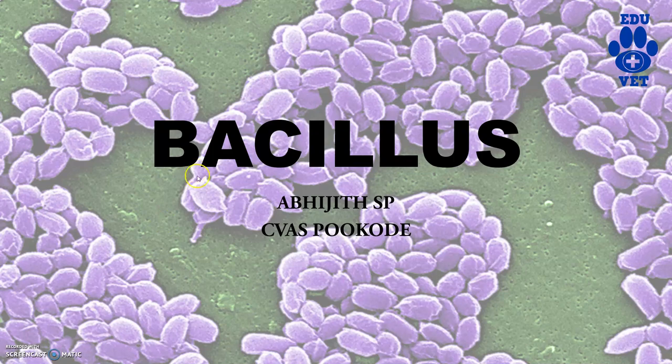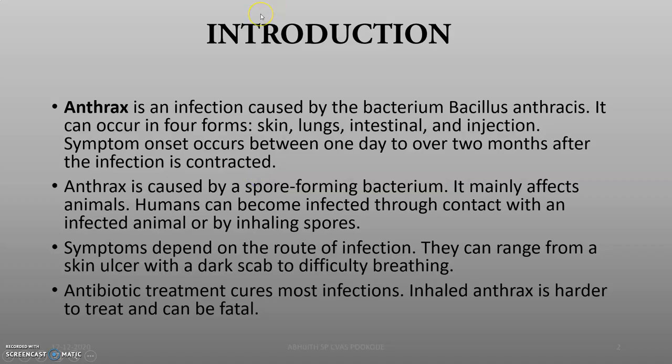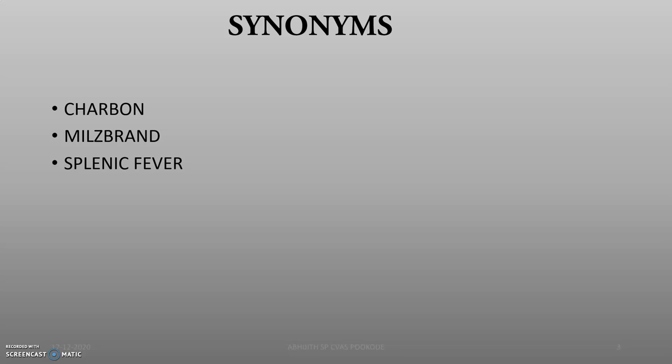Anthrax is a zoonotic disease. It is an infection caused by the bacterium Bacillus anthracis. It can occur in four forms and is actually caused by a spore-forming bacteria. The synonyms for anthrax are charbon, millsbrand, and splenic fever.